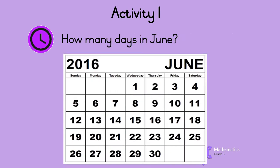How many days are there in June? What is the highest number you can see on the calendar? Can you see that it's 30? That means that there are 30 days in June.